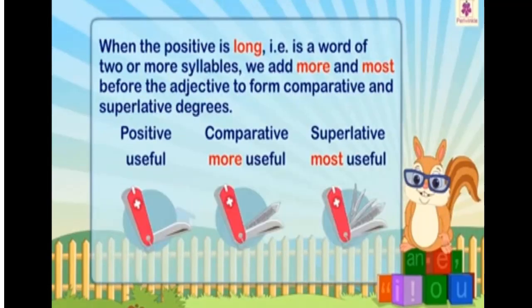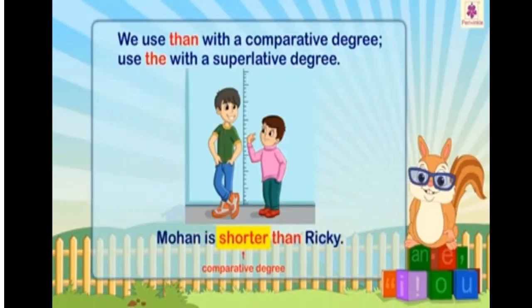When the positive is long, i.e. a word of two or more syllables, we add 'more' and 'most' before the adjective to form the comparative and superlative degrees. For example: useful, more useful, most useful. We use 'than' with the comparative degree and we use 'the' with the superlative degree.